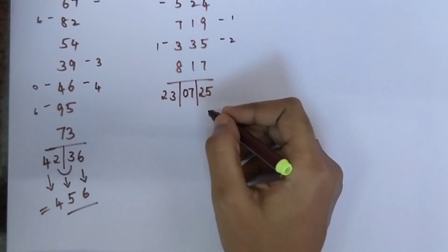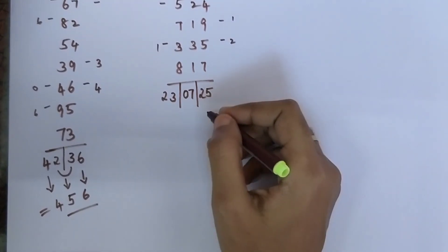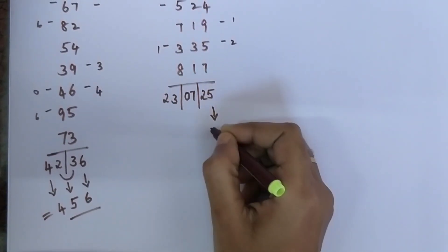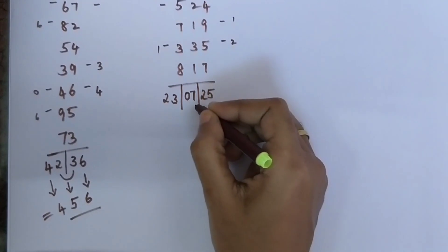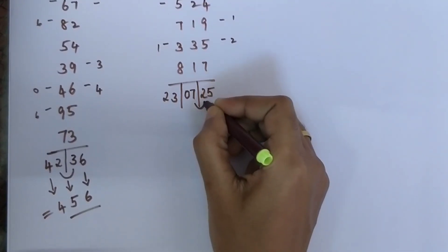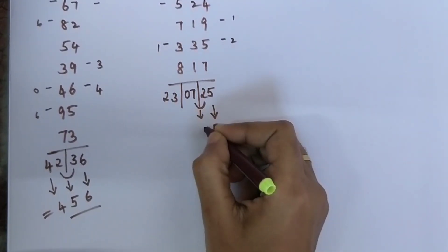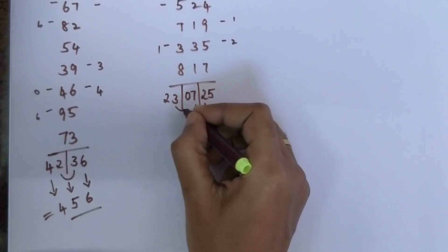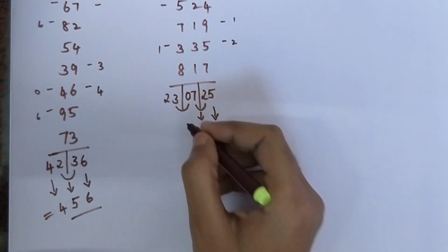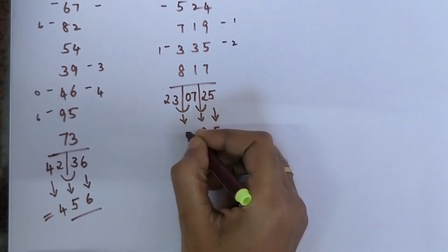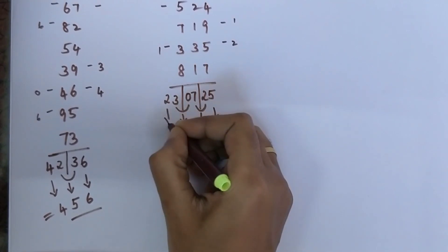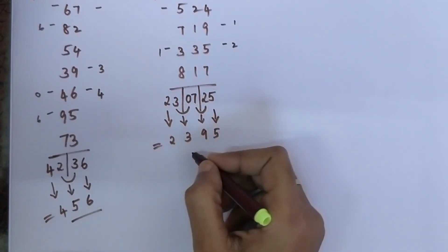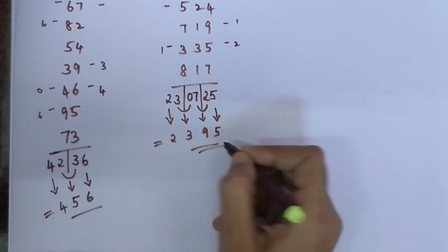Now I have to get the final answer. Last digit as it is: 7 plus 2 is 9, 0 plus 3 is 3, and the last number as it is. So my final answer is 239.